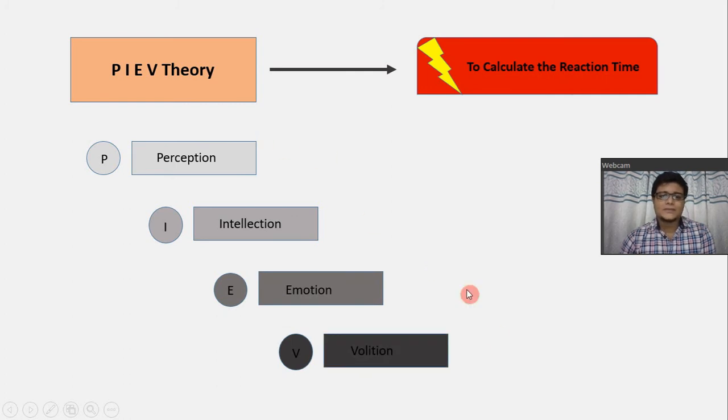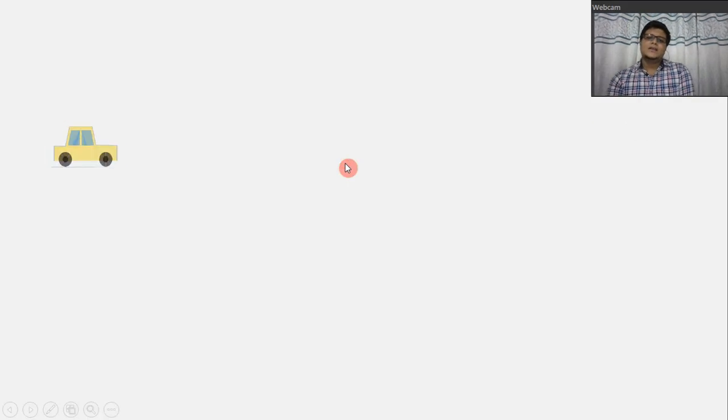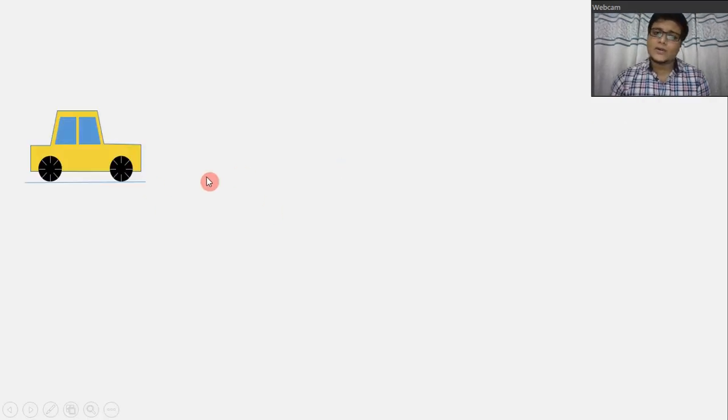So, this makes the PIEV theory. Now, coming in more details. Let us assume a car is moving through a road.